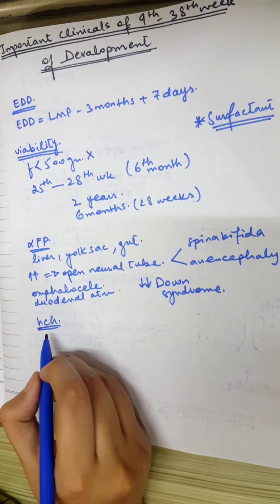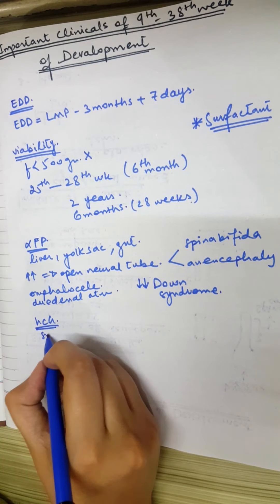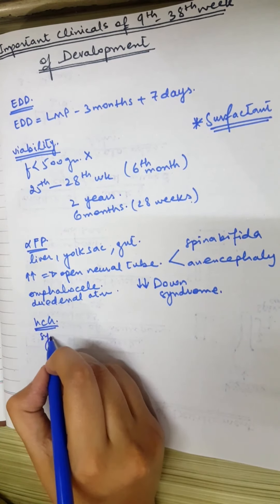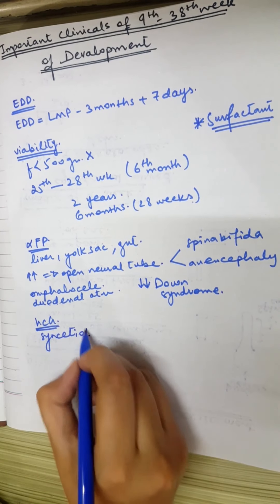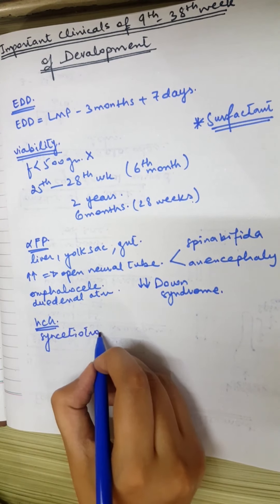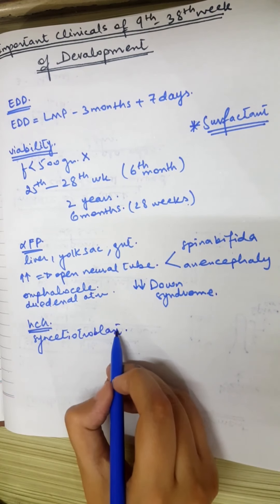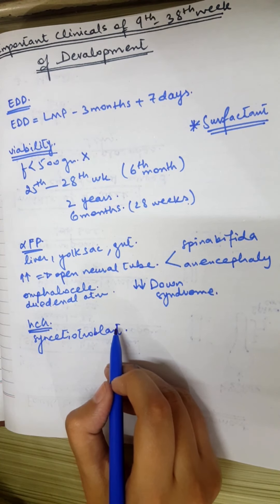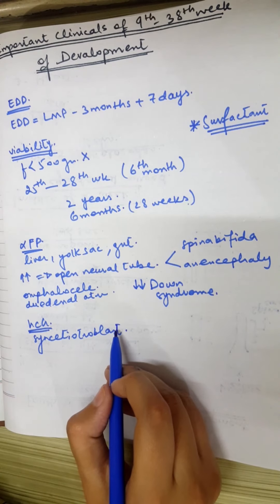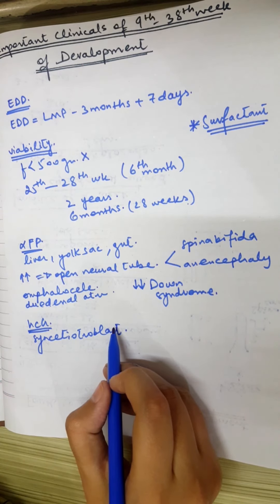HCG is a glycoprotein that is secreted by the syncytiotrophoblast, which we have discussed during development. HCG is the earliest detector of pregnancy. It is available for detection by around day 10 after fertilization.